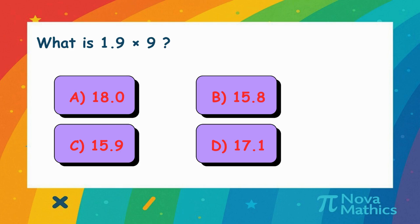What is 1.9 times 9? Is it A. 18, B. 15.8, C. 15.9, or D. 17.1?